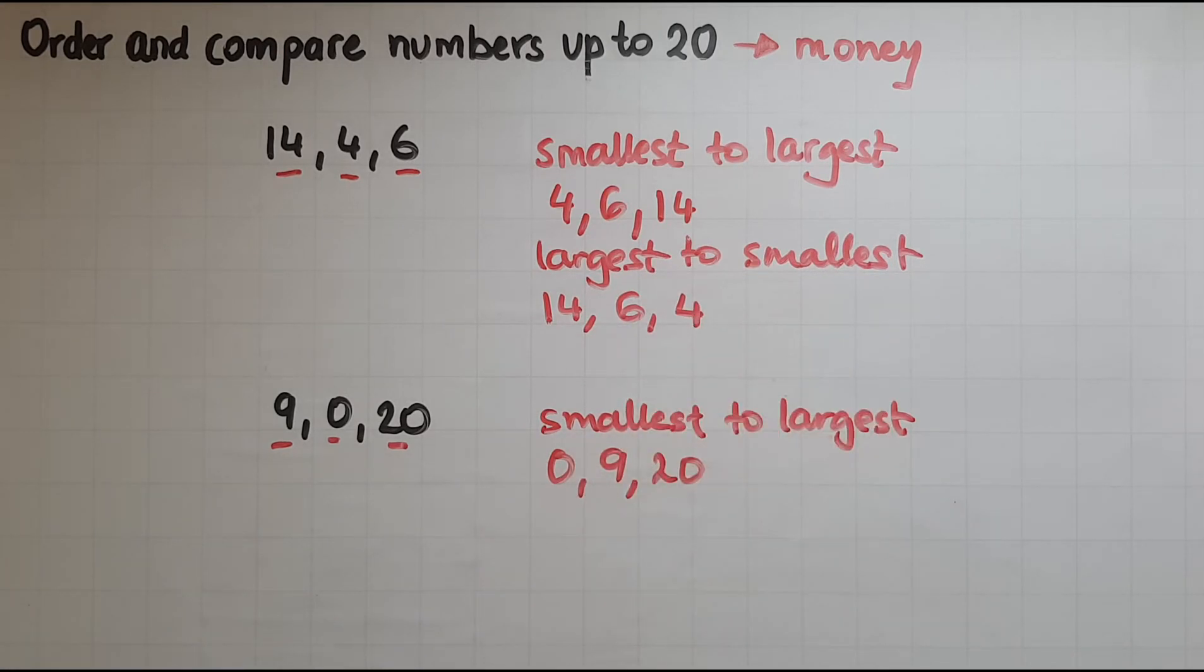It's like counting backwards. And the same thing if I do here with the largest first to the smallest. 20 was the biggest, so I'll put 20, then 9, and 0. So I've ordered these numbers.